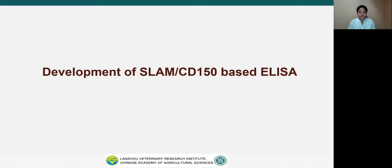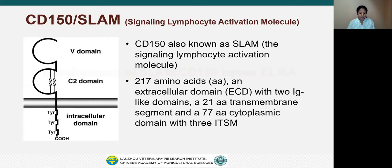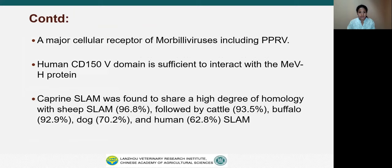After this brief background, let's talk in detail about the development of SLAM or CD150-based ELISA. Before we talk about SLAM-based ELISA, we need to know what is CD150 or SLAM. CD150, also known as SLAM, stands for Signaling Lymphocytic Activation Molecule. It consists of 270 amino acids, an extracellular domain with two immunoglobulin-like domains, a 21 amino acid transmembrane segment and a 77 amino acid cytoplasmic domain with three tyrosine-based motifs. The extracellular domain consists of V domain and C2 domain. SLAM is a major cellular receptor of Morbilliviruses including PPRV.